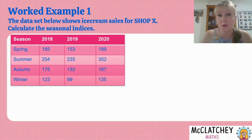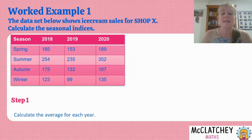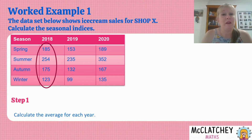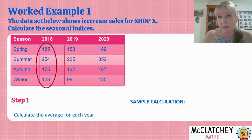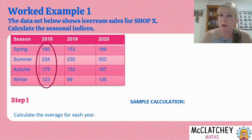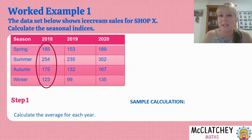Okay, so let's work out — following those three steps — how to calculate these seasonal indices. Step one is we calculate the average for every year, so we've got three years and we're going to calculate three averages. Starting with 2018: the average is the same as the mean — we add the numbers up and divide by how many there are, in this case four. In an exam you don't necessarily need to show every single calculation, but I would recommend showing a sample calculation for each step. Talk to your teacher, as they may have higher expectations depending on marks allocated.